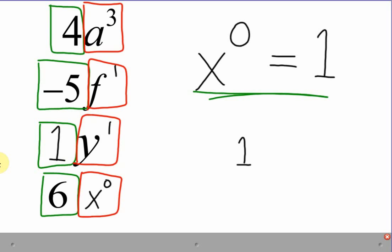So 6x to the exponent 0 is the same as 6. Proving that, look, 6 is a term. It does have a number part and a somewhat invisible, strange sort of variable part. But hey, it's a term.